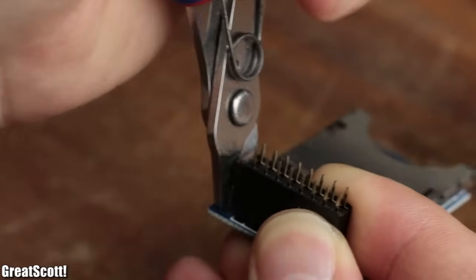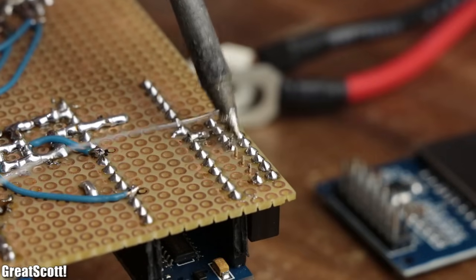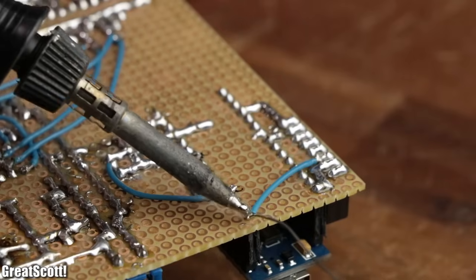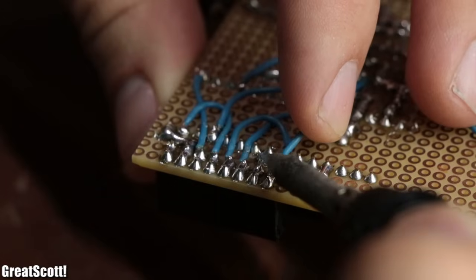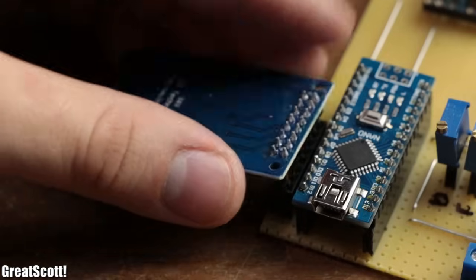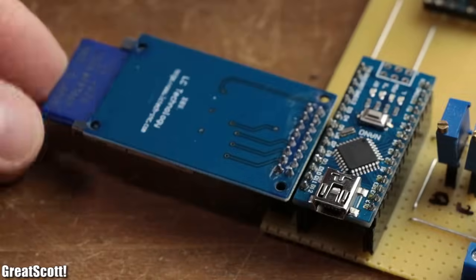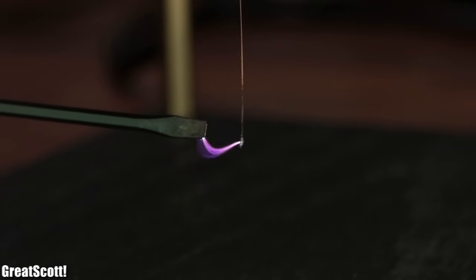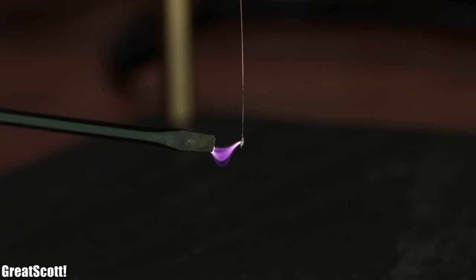So I created a fitting female header, soldered it to the perfboard, and connected it to the Arduino. Afterwards I changed the interrupt pin connection from pin 5 to pin 9, plugged in the SD card module and card, and verified that everything worked correctly by listening to an entire song played by my Tesla coil.